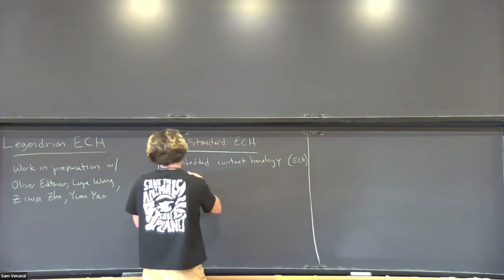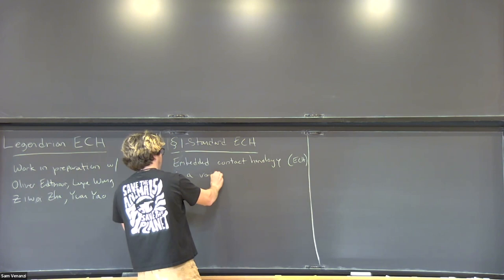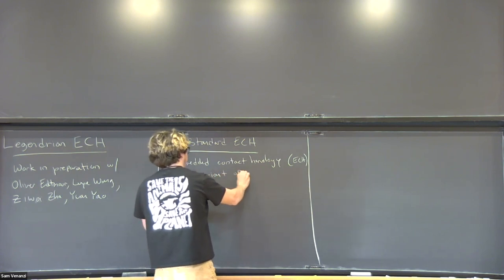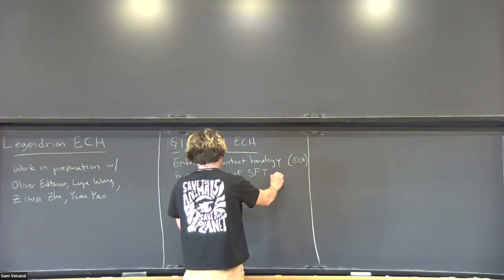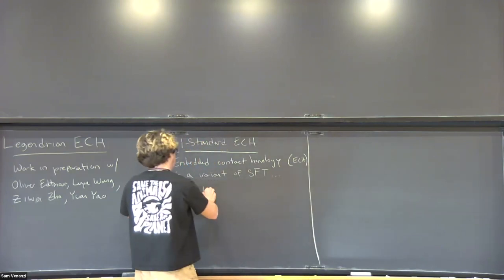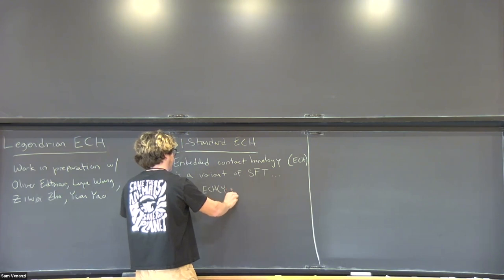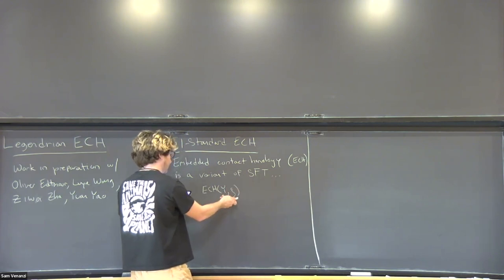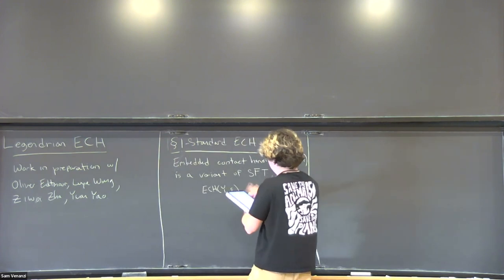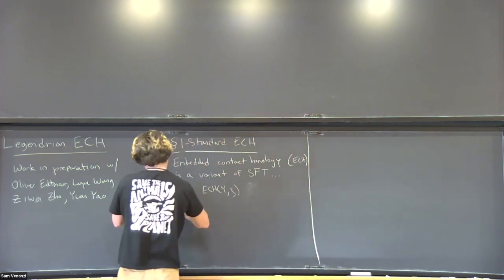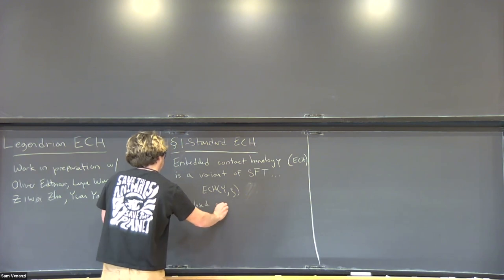What is ECH? It's a variant of SFT—you can think of it as a variant of symplectic field theory, although the setup is a little bit different. It's associated to a closed contact three-manifold and a contact structure.